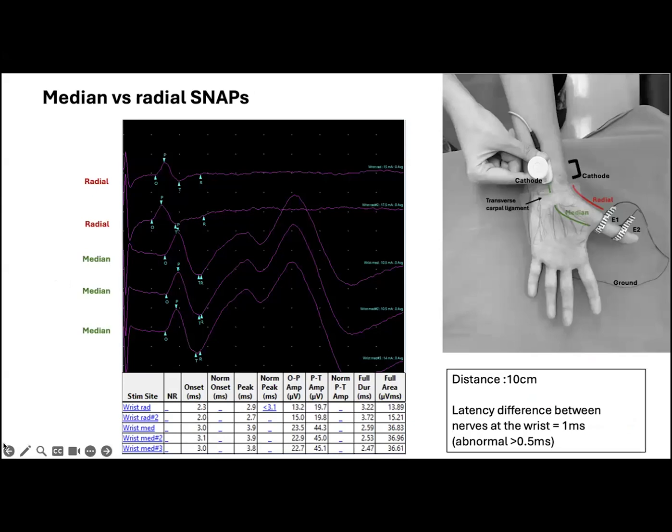Let me start by giving you some examples. These are antidromic median and radial nerve conduction studies, stimulating at the wrist and recording at the first finger, with a distance of 10 centimeters, in a case of median neuropathy at the wrist. The first two tracings represent radial snaps, where the stimulus intensity was gradually increased.